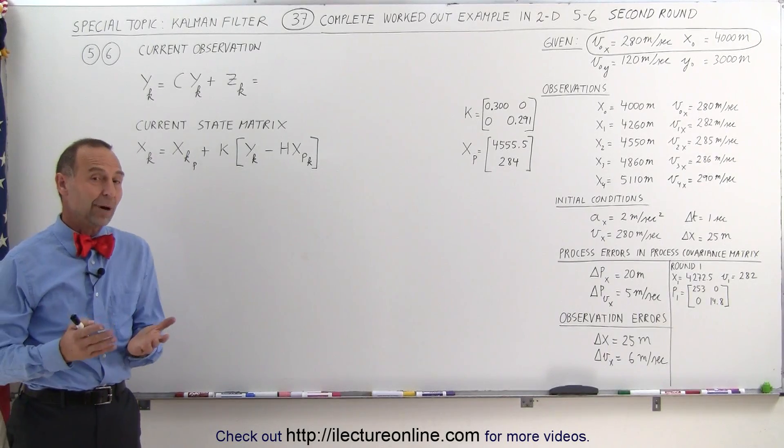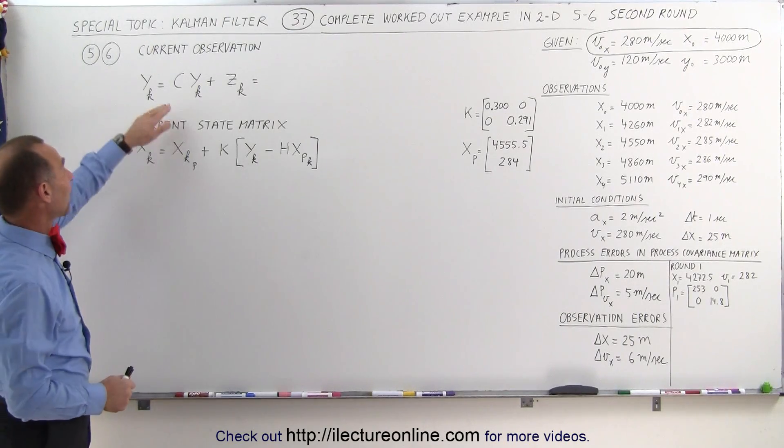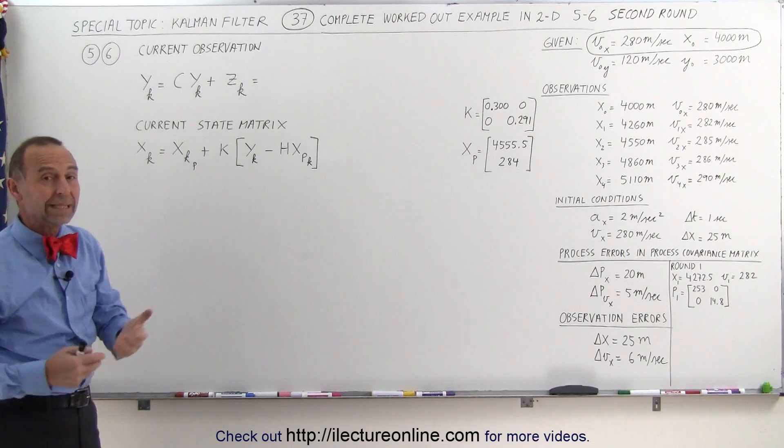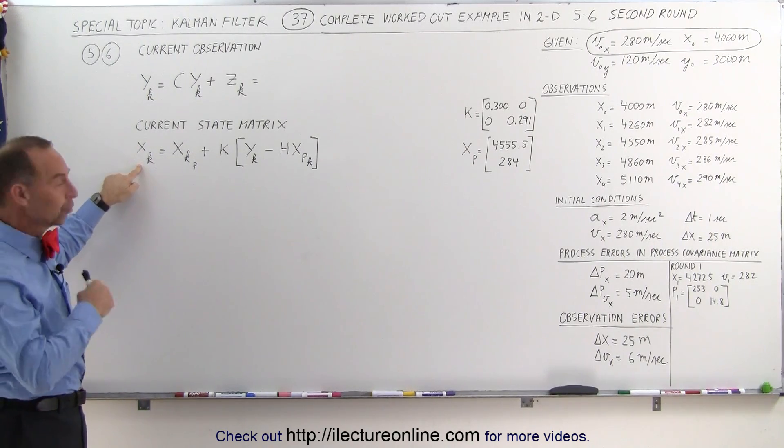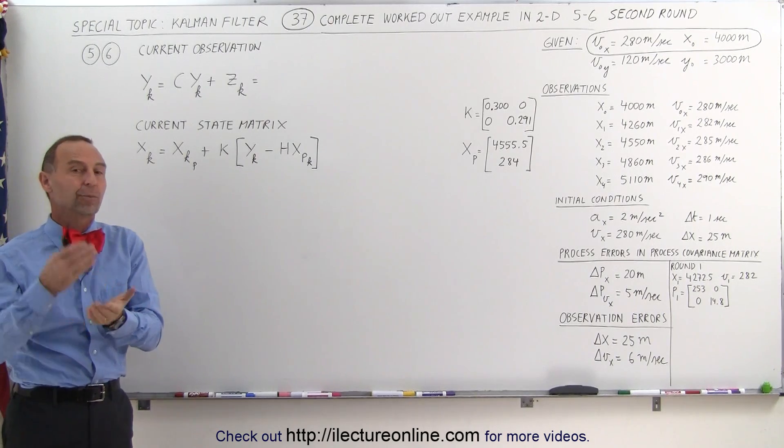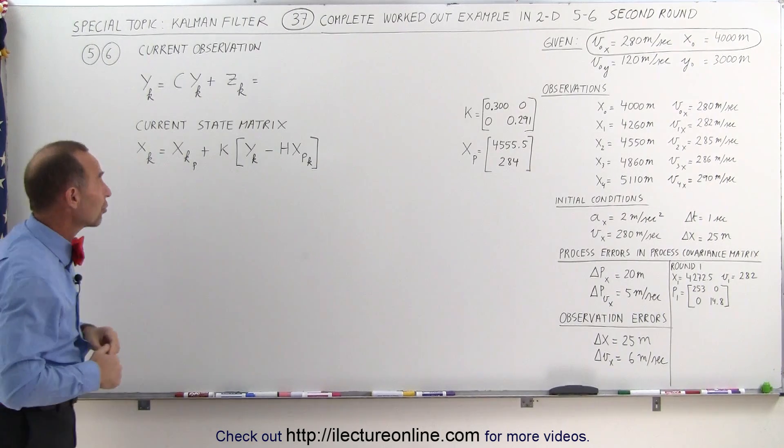The next step in the second round is going to take the current observation and combine it with the Kalman gain to come up with the current state matrix. The updated values for position and velocity of the plane that we're tracking.